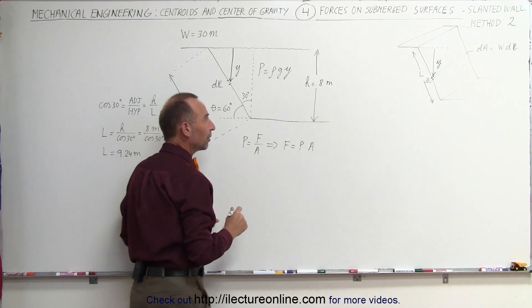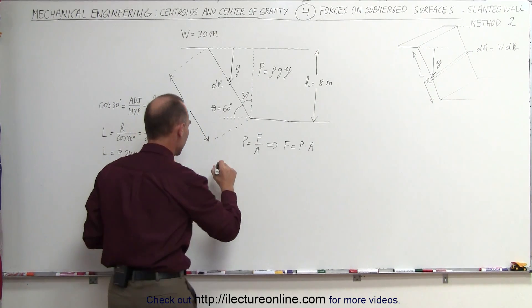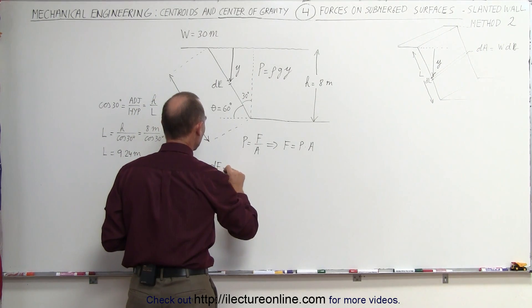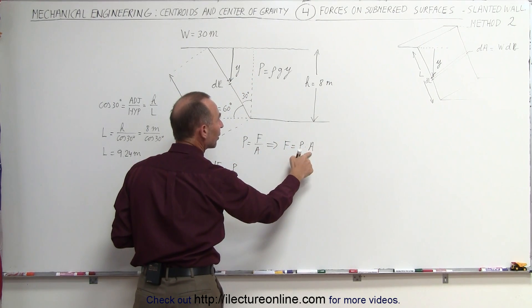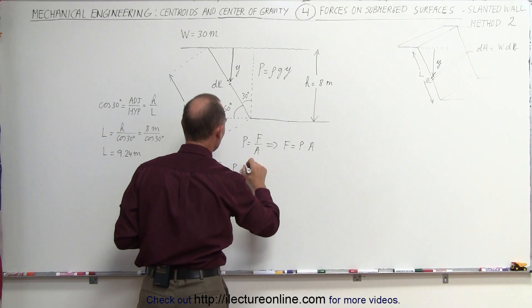So the force on that small little strip, let's call that a df, a small amount of force. And that is equal to the pressure at that depth, called p, times the area. In this case, the small amount of area is dA.